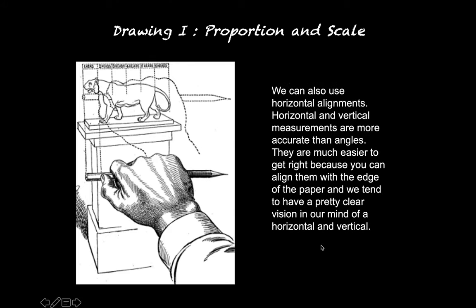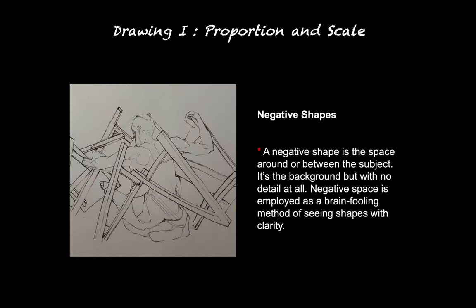We can also use horizontal alignments. Horizontal and vertical measurements are more accurate than angles — they're much easier to get right because you can align them with the edge of the paper, and we tend to have a pretty clear vision of a horizontal and a vertical. Negative shapes are also really helpful — something students often tend to forget about. Take a look at the space in between elements. A negative shape is the space around or between the object or subject, with no detail at all. Negative space is employed as a brain-fooling method to see shapes with clarity. The empty spaces between elements can be easier to judge than the shapes of the subjects themselves, because we have less preconceived notions about what those shapes should look like, making us more likely to have an unbiased evaluation.